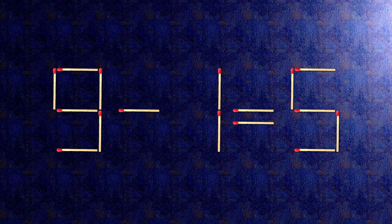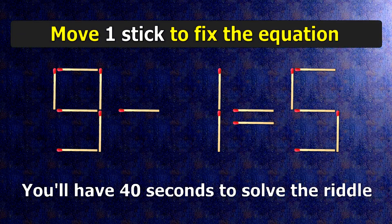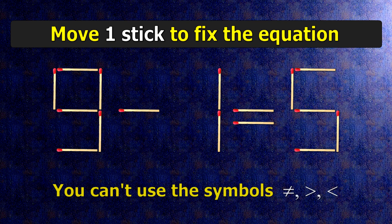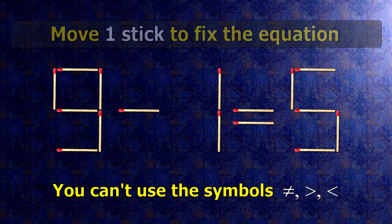We have the equality 9 minus 1 equals 5. Our equality is wrong. We need to move one match to make our equality correct.